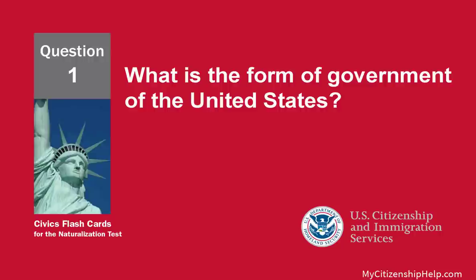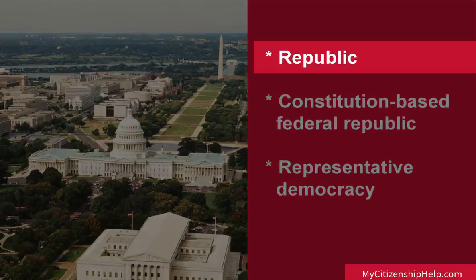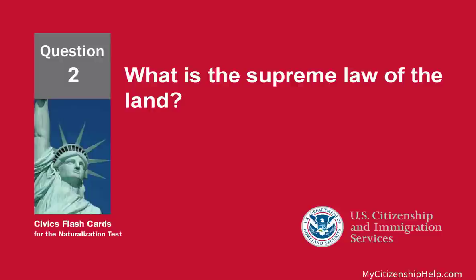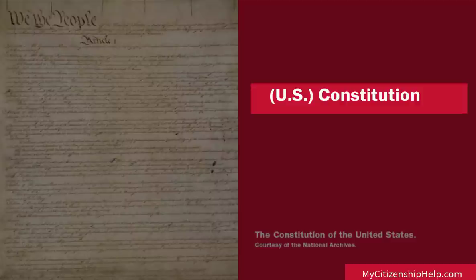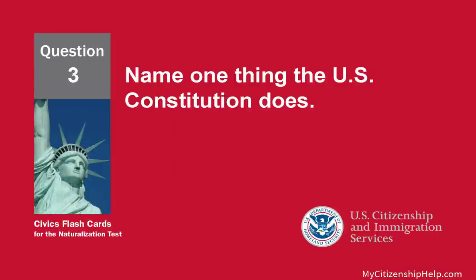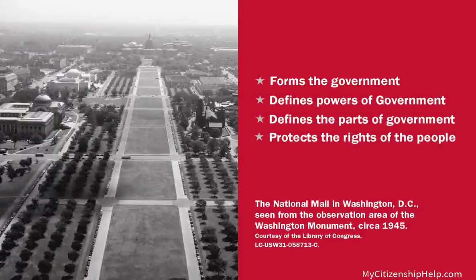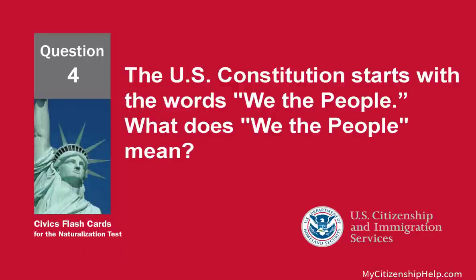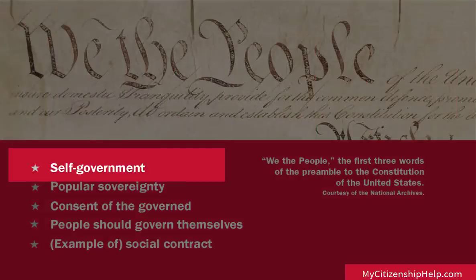What is the form of government of the United States? Republic. What is the supreme law of the land? Constitution. Name one thing the US Constitution does. Forms the government. The US Constitution starts with the words 'We the people.' What does 'We the people' mean? Self-government.